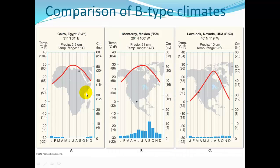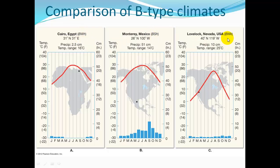Comparing B climate types: Cairo, Egypt has a nice seasonal temperature range — warmer in summer — with very little rainfall year-round, almost none in summer and just a little in winter. Monterrey, Mexico is more continental with more variable temperatures and rainfall mostly in summer. A steppe BS climate has more rainfall than a desert climate. Another desert location in the interior of the United States shows more dramatic temperature changes and very low rainfall year-round.